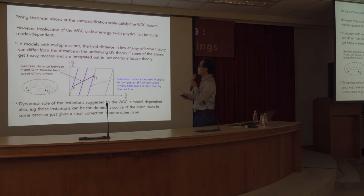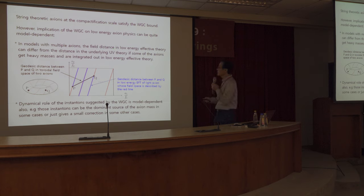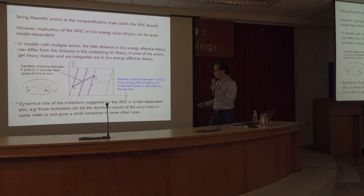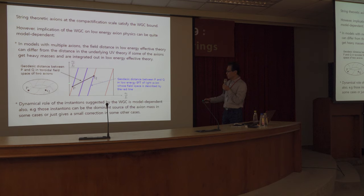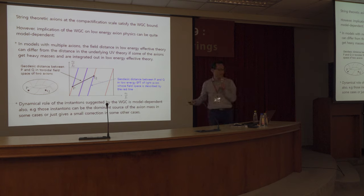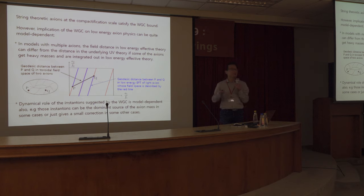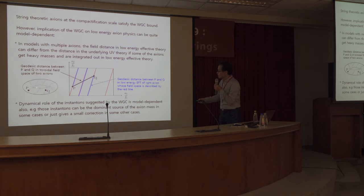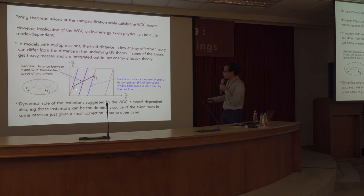Furthermore, in models with multiple axions, the field distance in the low-energy effective theory can dramatically differ from the distance in the underlying UV theory. As a simple example, consider a theory with two axions and field distance from point P to point Q. In the full theory involving both axions, the geodesic distance is simply this straight black line in the field space. But suppose one axion combination gets a heavy mass and is integrated out — you are left with only one single light axion, described by the red line in the two-dimensional field manifold.